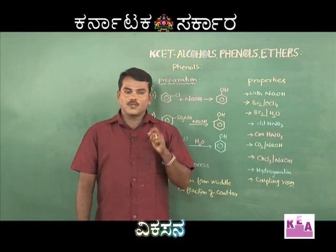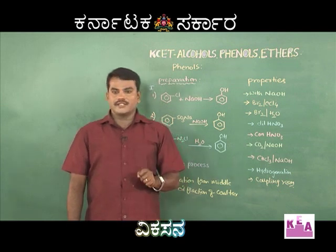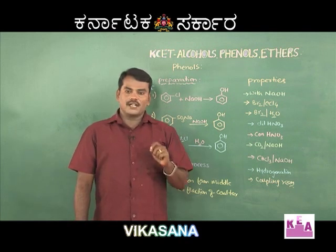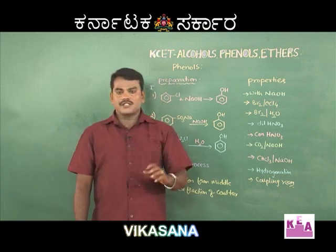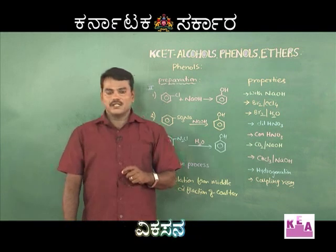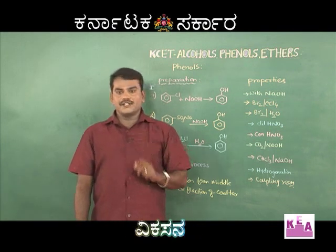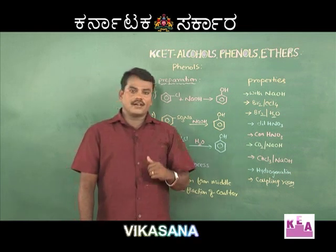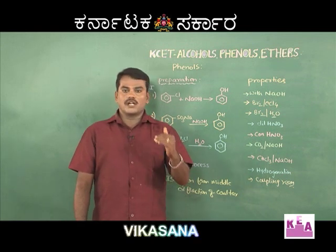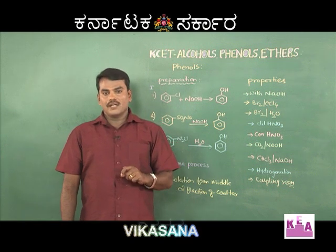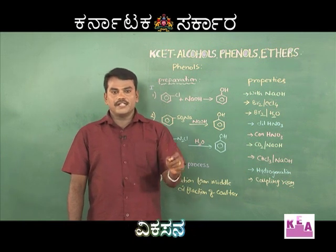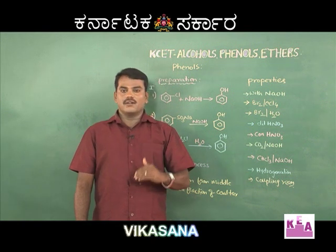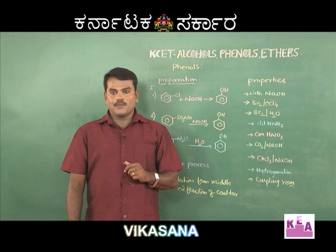To understand this, you should know the orienting or directive influence. Since phenol contains an OH group, which is an electron-releasing group, a ring-activating group, and an ortho-para orienting group, the incoming electrophile will be directed to the ortho and para positions only. The OH group increases electron density at ortho and para positions, thereby directing the electrophile to those positions.